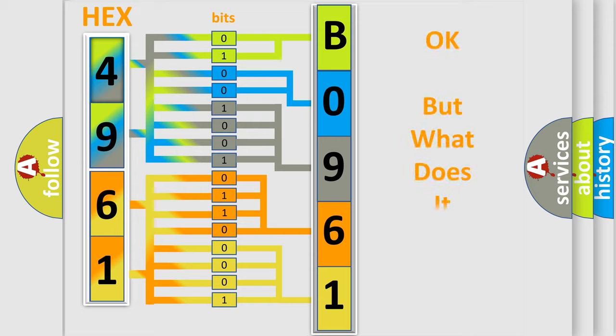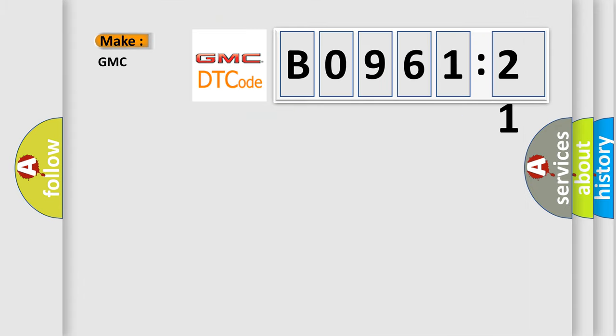The number itself does not make sense to us if we cannot assign information about what it actually expresses. So, what does the diagnostic trouble code B096121 interpret specifically for GMC car manufacturers?